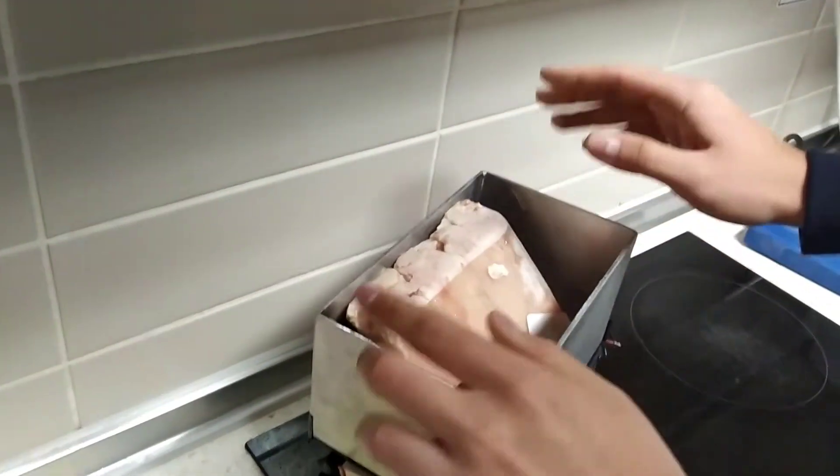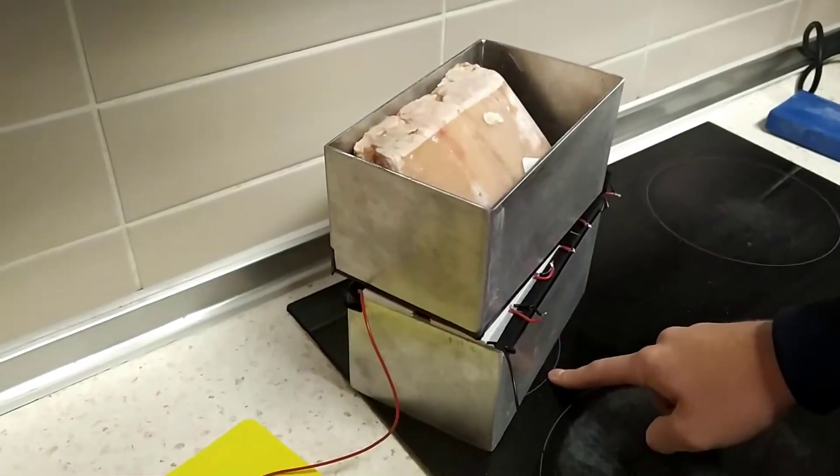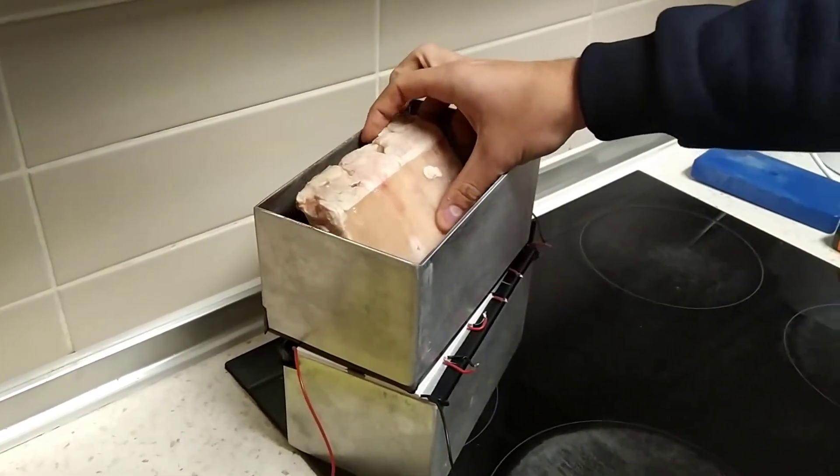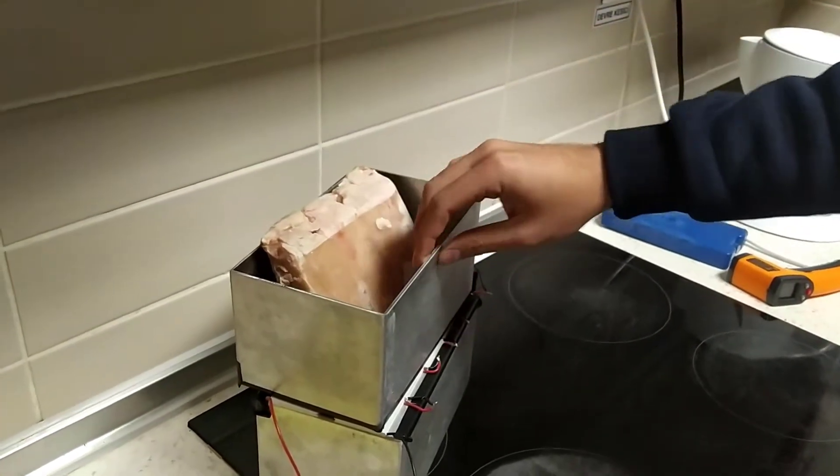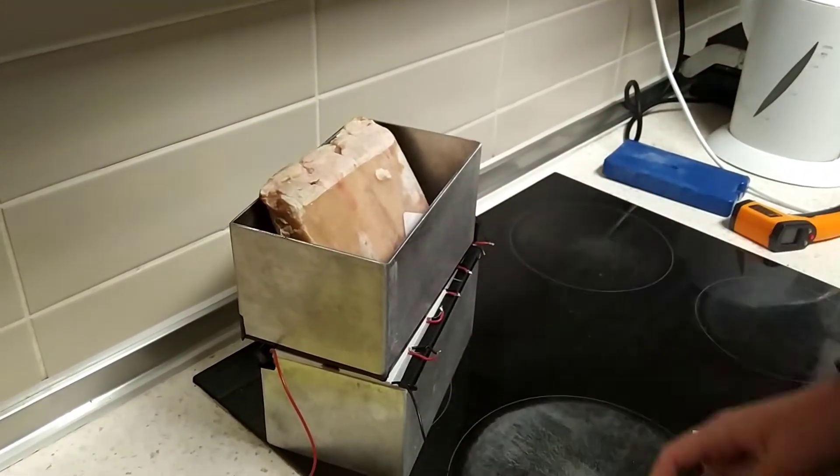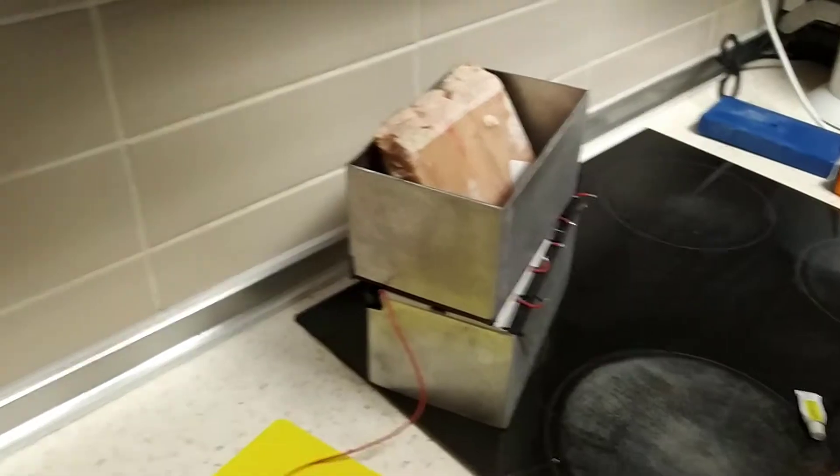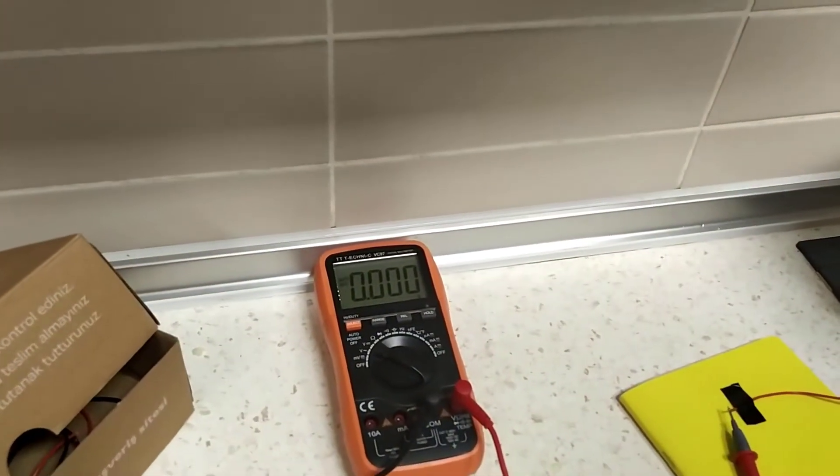And the system is basically like this, where we have a grill here and we have a cooler side. In this example, we have a frozen chicken. So the temperature difference will create a voltage difference, and we will read the voltage difference on the screen of a digital multimeter.